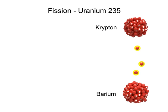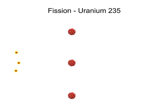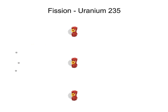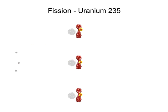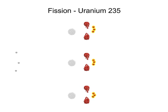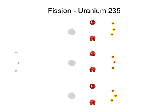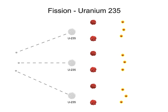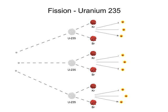Three neutrons are also generated from this powerful release of energy. The three forcefully ejected neutrons can each strike an atom of uranium, resulting in, in the case of an atomic bomb, a catastrophic chain reaction.